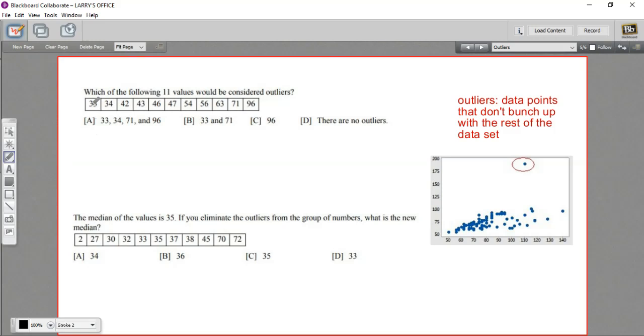So between 33 and 71, they all kind of bunch up. They're all within at least 10 of each other. And then suddenly we get this big jump up to 96, which is 25 away from the next nearest one. So this 96 seems to be off on its own to a greater degree.